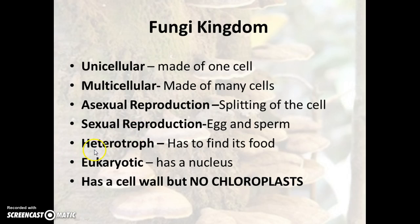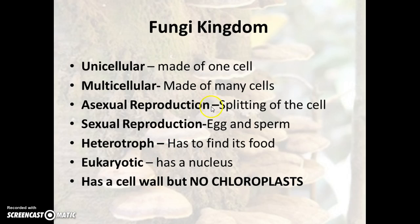All fungi are considered heterotrophs, meaning they have to find their food. Organisms in the fungi kingdom usually live off dead and decaying material. Their cells are eukaryotic, so they have a nucleus. Many students think mushrooms are more like plants, but they're not — they don't have chloroplasts, they're not green, so they have to find their own food. However, fungi do have a cell wall to help them stand up as they grow.